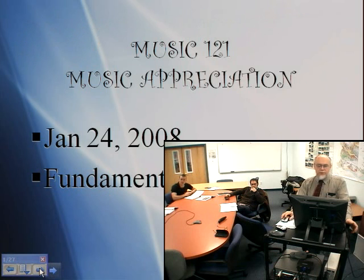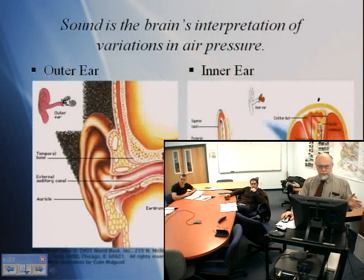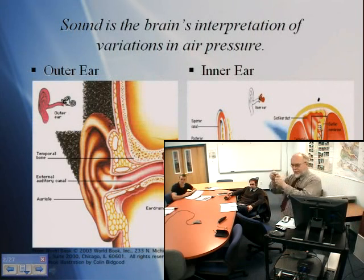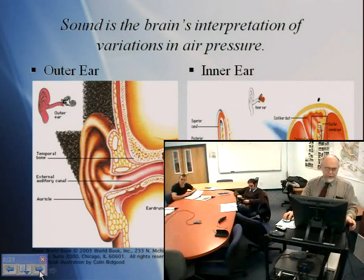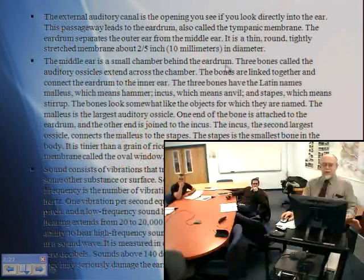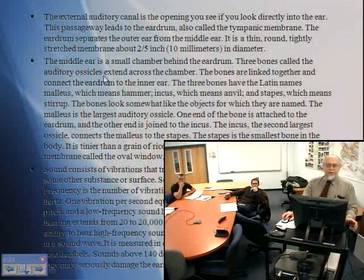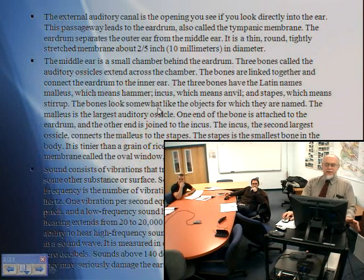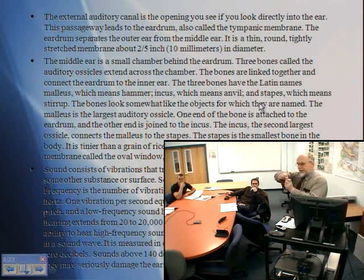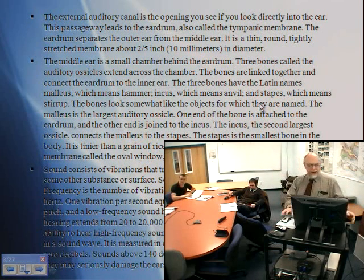We're talking about the ear. These are nice little pictures. The vibration goes into your inner ear and it wiggles these little bones inside. They turn into little electrical and chemical signals, and that's what your brain interprets as sound. The middle ear is a small chamber inside the eardrum. The three bones called the auditory ossicles extend across the chamber. The three bones have Latin names: malleus, incus, and stapes. They all work together to make these little twisting, turning motions which turn into electrical signals which your brain interprets as sound.